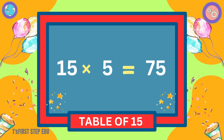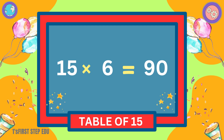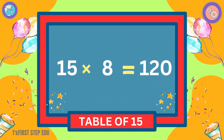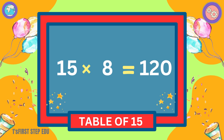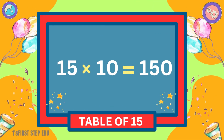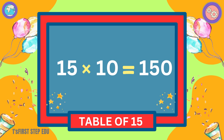15 fives are 75. 15 sixes are 90. 15 sevens are 105. 15 eights are 120. 15 nines are 135. 15 tens are 150.